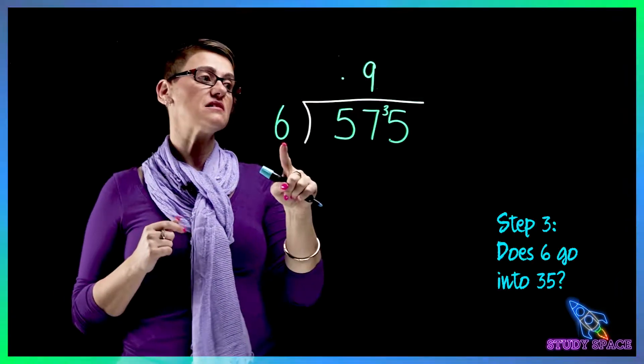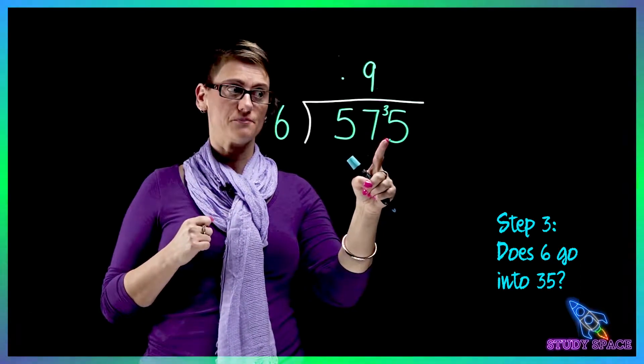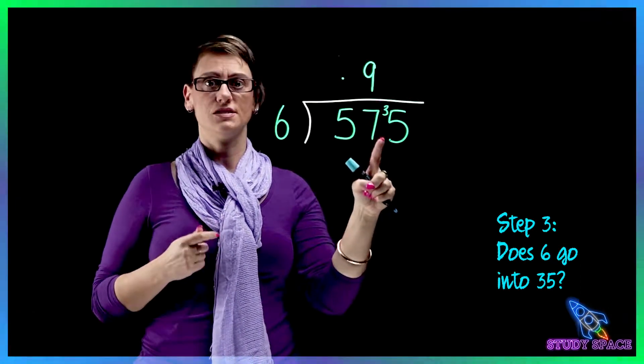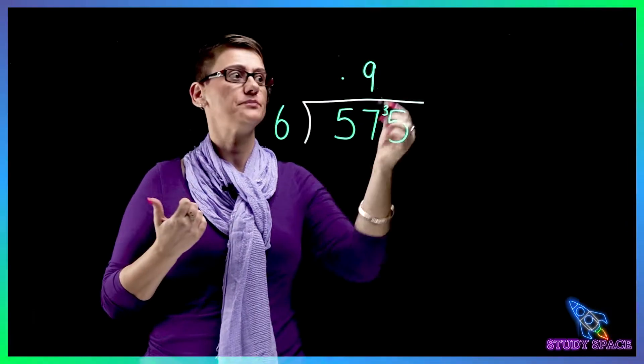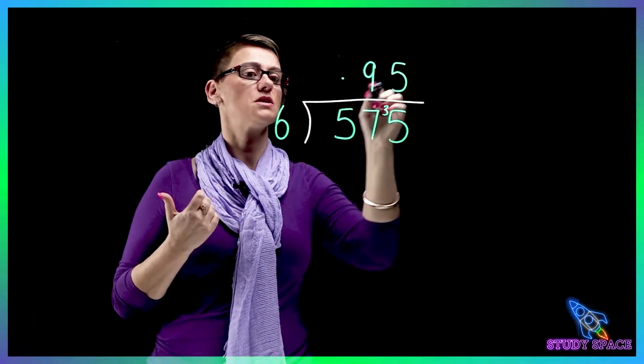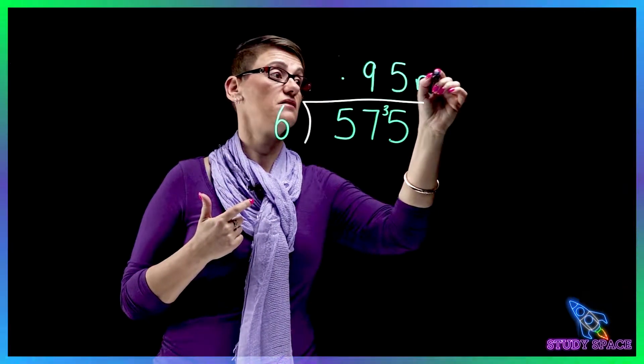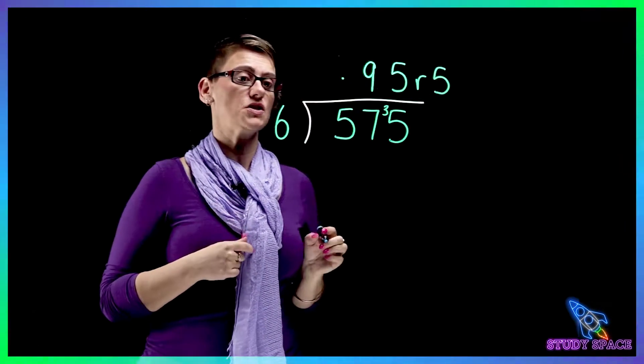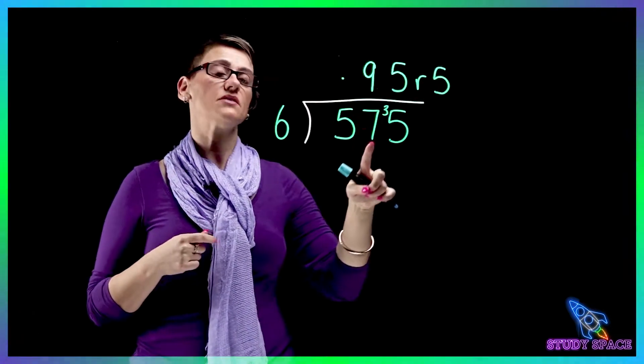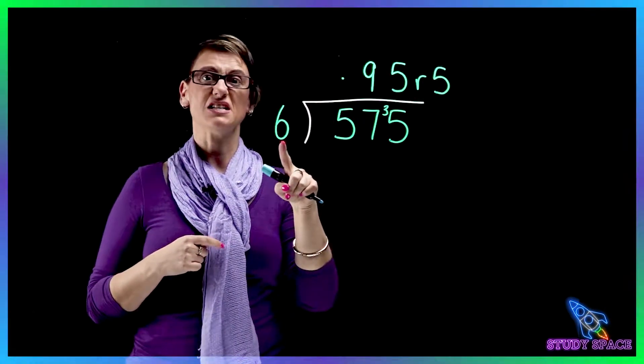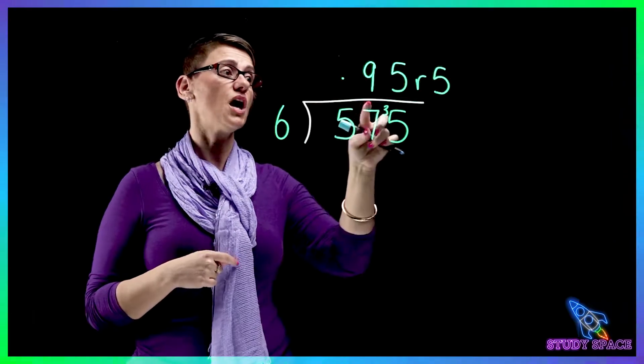Okay. So 6 into 35. It doesn't quite go 6 times, so it's 5. So 5 sixes are 30, which means I've got 5 left over. So 575 divided by 6 equals 95 remainder 5.